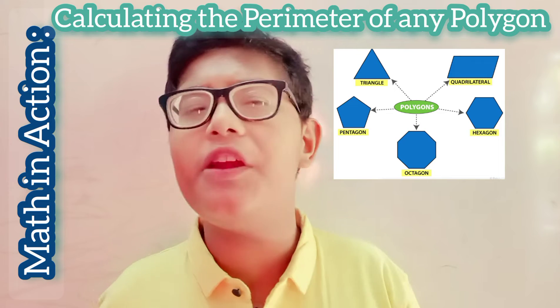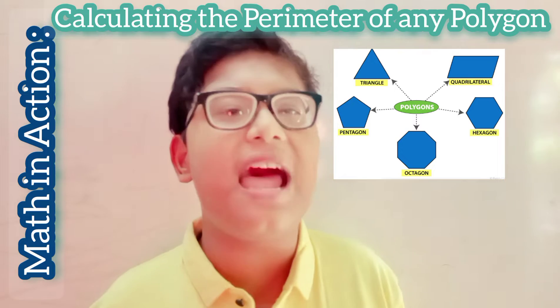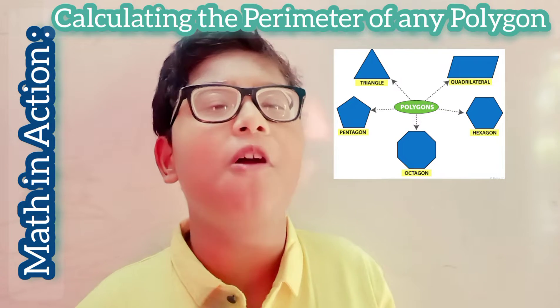In geometry, a polygon is a plane figure with at least three straight sides and angles, and typically five or more.